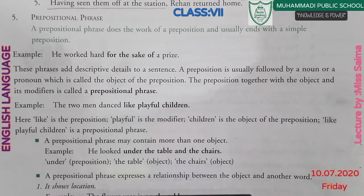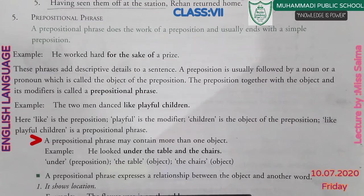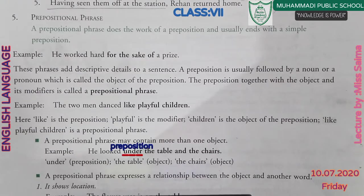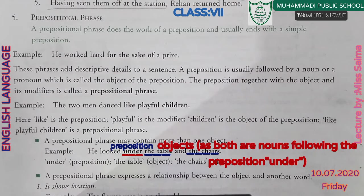Another detail about prepositional phrases: a prepositional phrase may contain more than one object. For example: 'He looked under the table and the chair.' Here, 'the table' and 'the chair' are both objects.